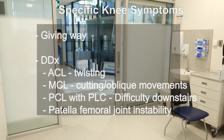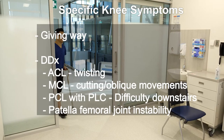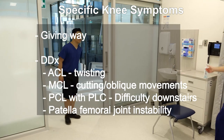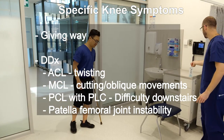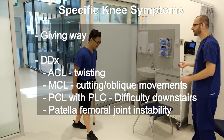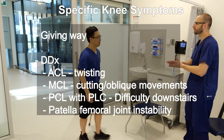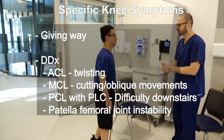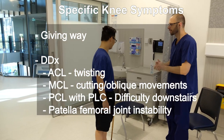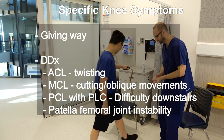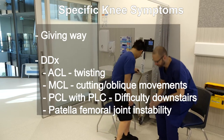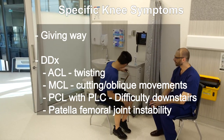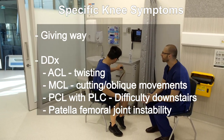Attention to the patient should start as they walk in the room, with particular attention to the patient's face for any signs of pain or apprehension, their gait, presence or absence of walking aids, and comparison to the contralateral limb.